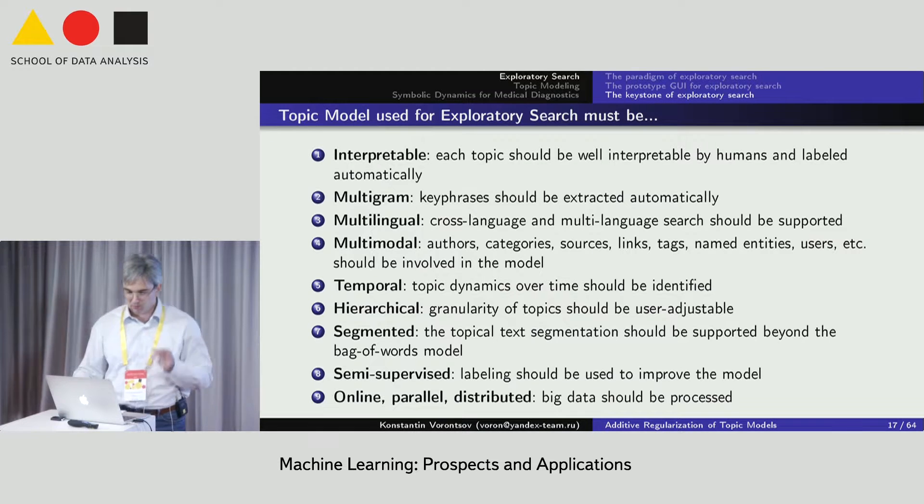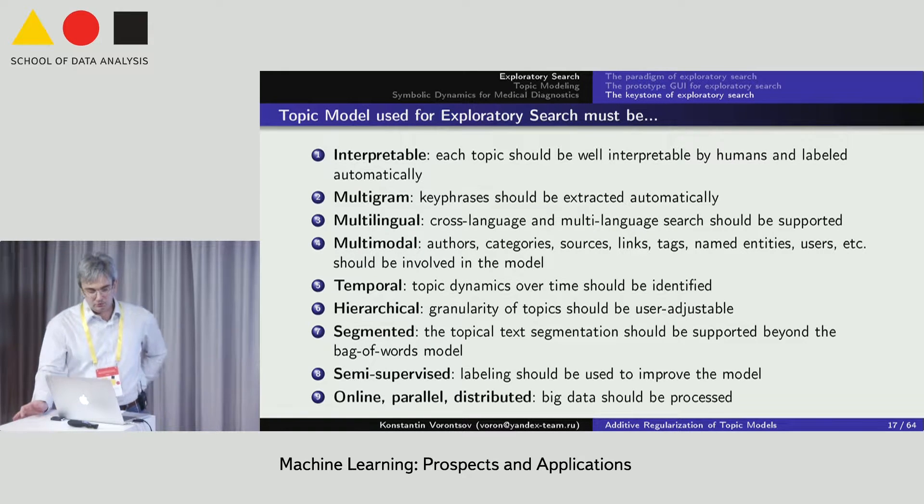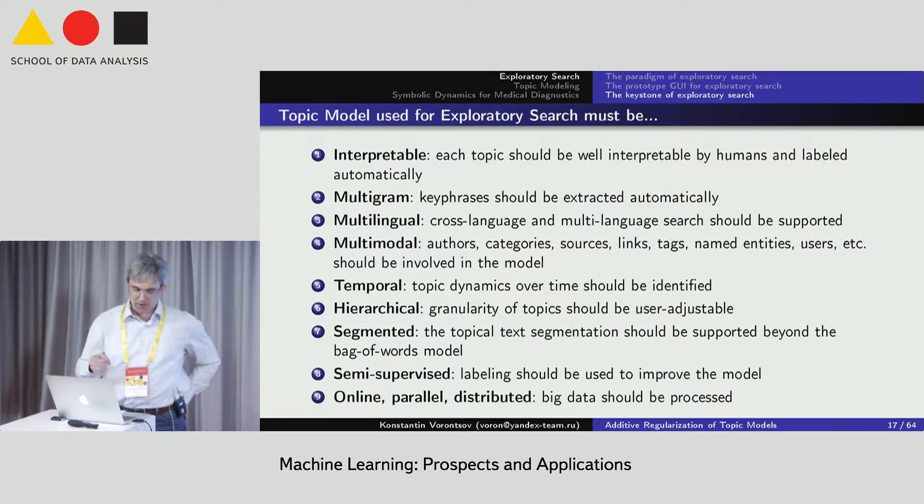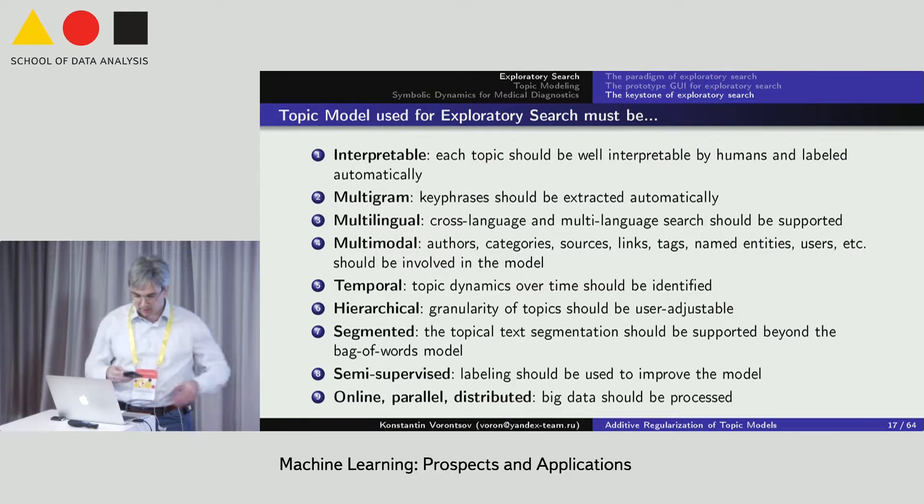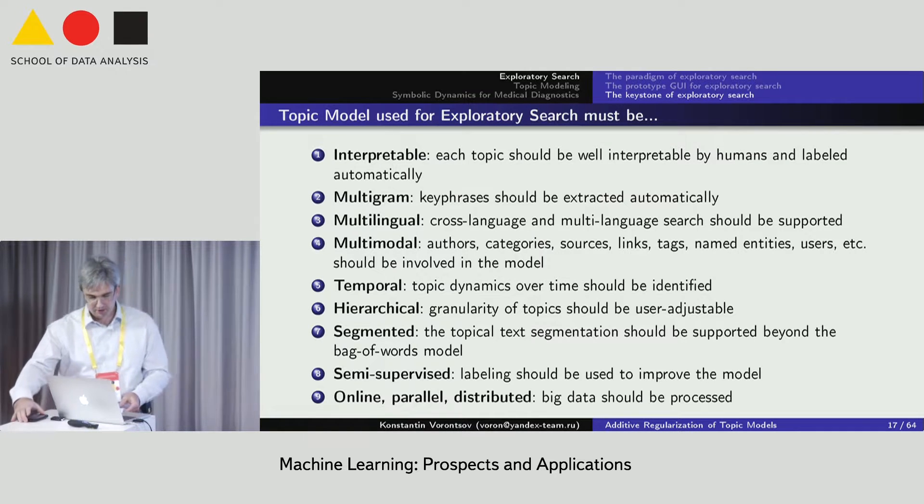The problem is that topic models for exploratory search must meet too many requirements at once. Topics should be well interpretable by human and labeled automatically. Terminological key phrases should be extracted automatically also. The search engines should support the cross-language and multi-language search. The model should recover the topic dynamics over time, the topic hierarchy and the topical segmentation structure of any document. All of these above extensions of topic models are known in the vast literature. But the challenge is to combine them into one multi-objective topic model and also to meet the requirements of big data such as online parallel distributed processing.